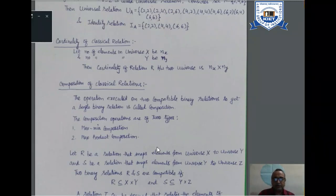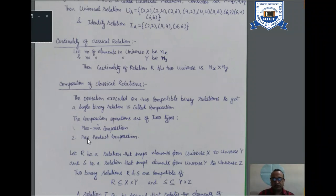This composition is only possible when we have compatible relations. The composition can be done in two ways: one is the max-min composition, and the other is the max-product composition. In most cases, we will be using the max-min composition.